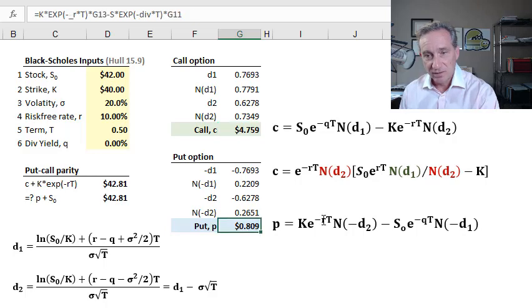And then for a put, really the terms are just reversed. We start with the strike price and we subtract the adjusted stock price. But you can see the cumulative standard normal distribution functions take negative d2, negative d1 instead of positive d1, d2.